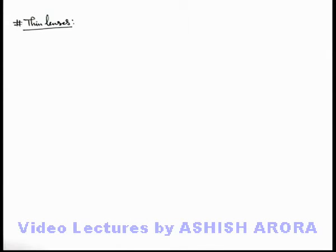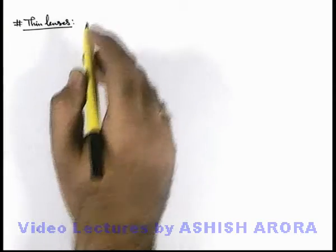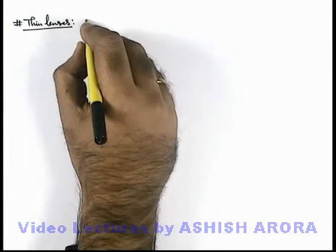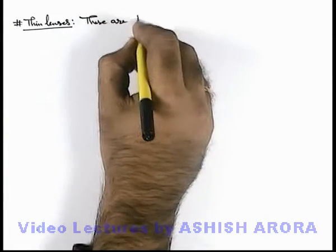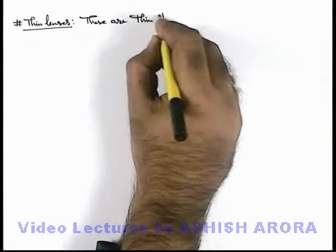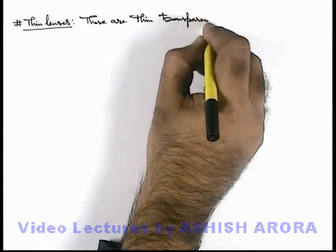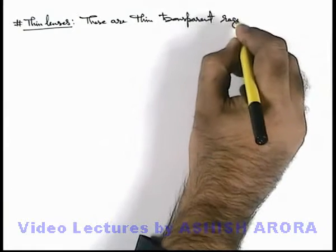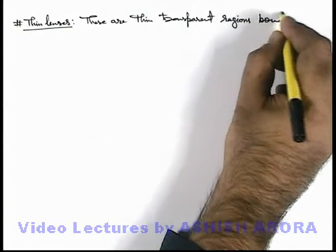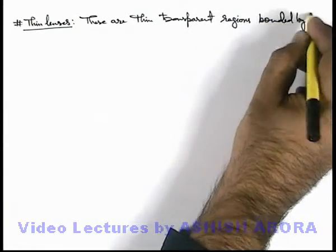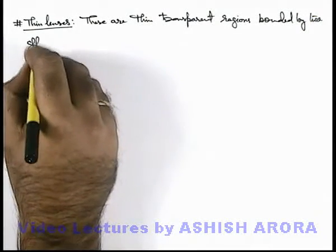Let us now study about thin lenses. About thin lenses we can write that these are thin transparent regions which are bounded by 2 spherical surfaces.